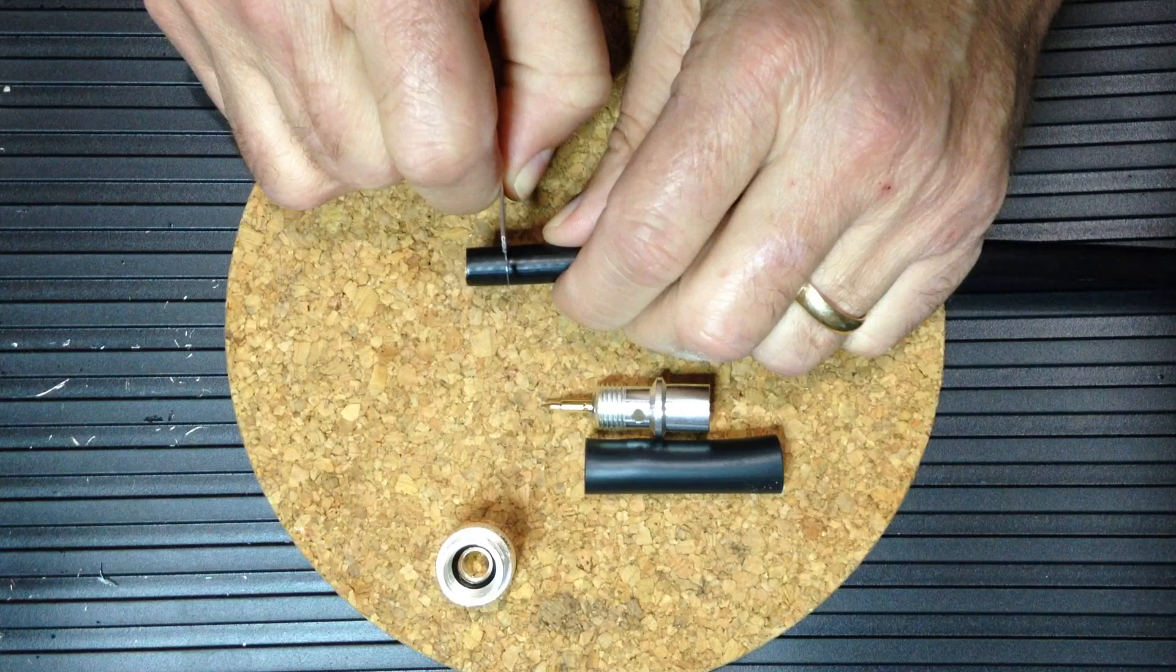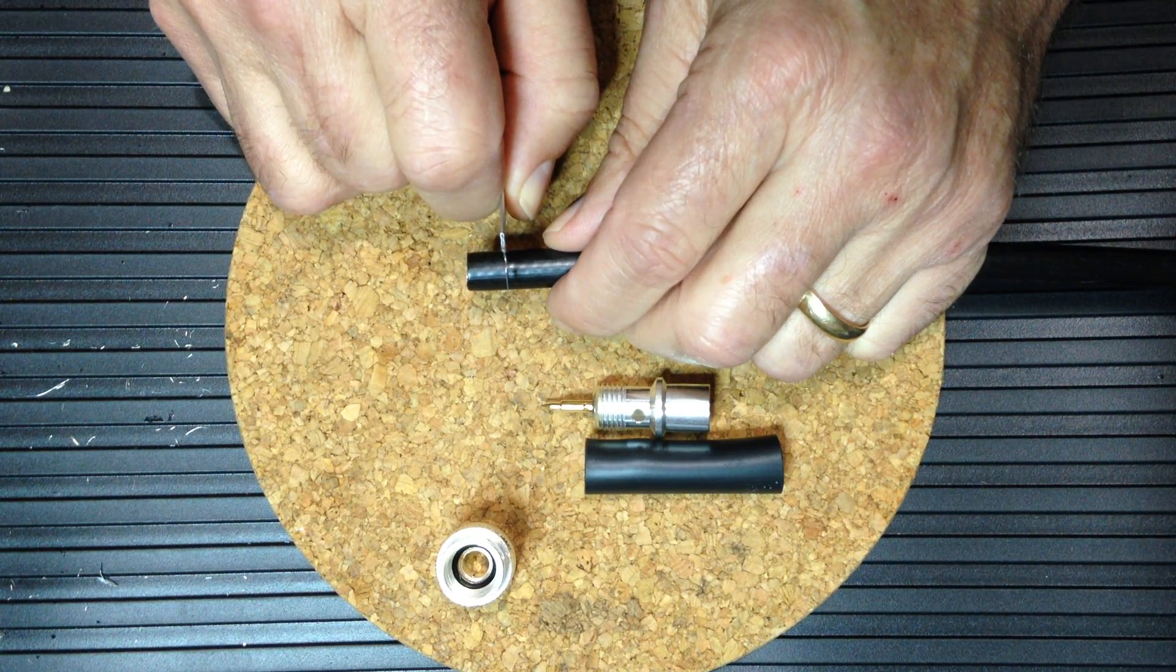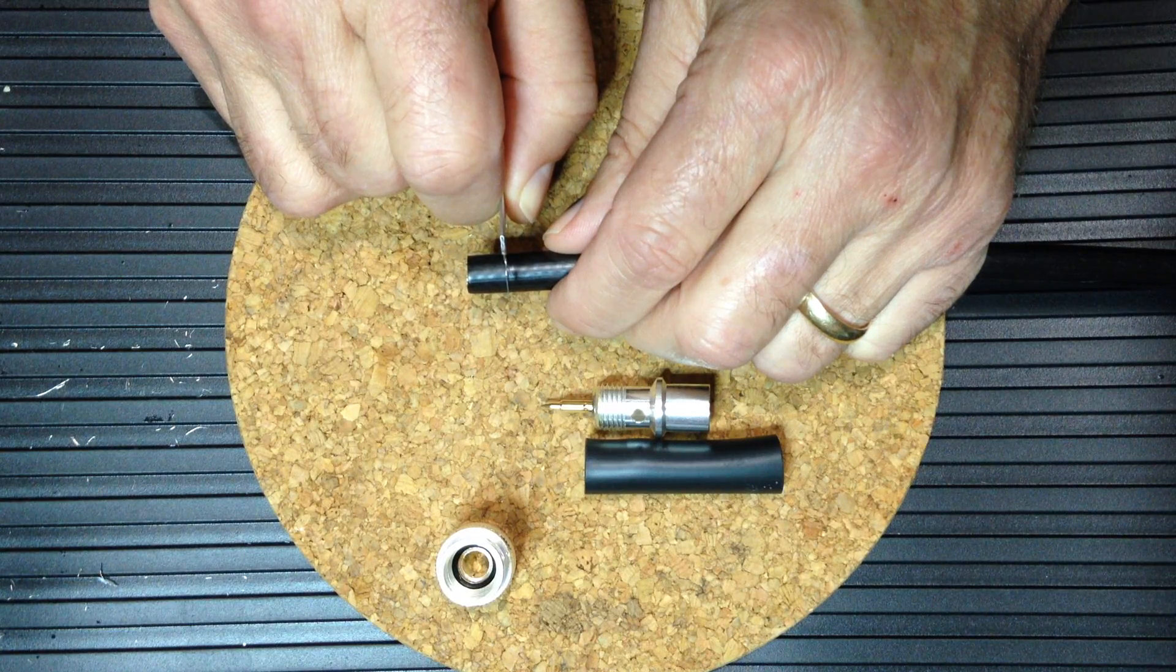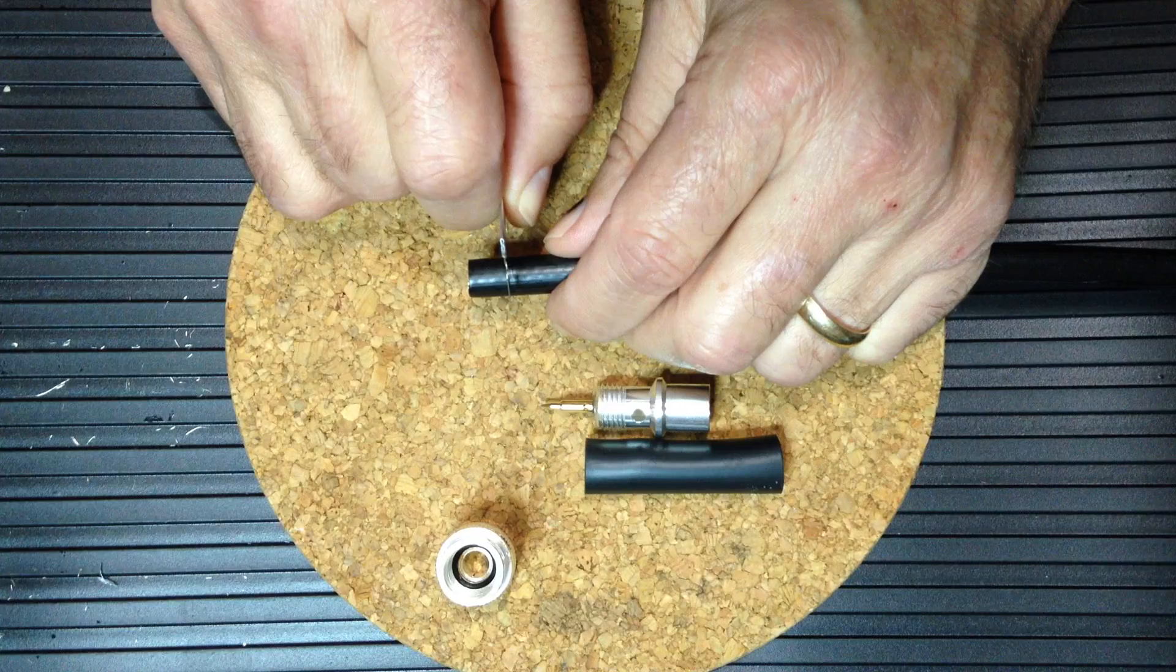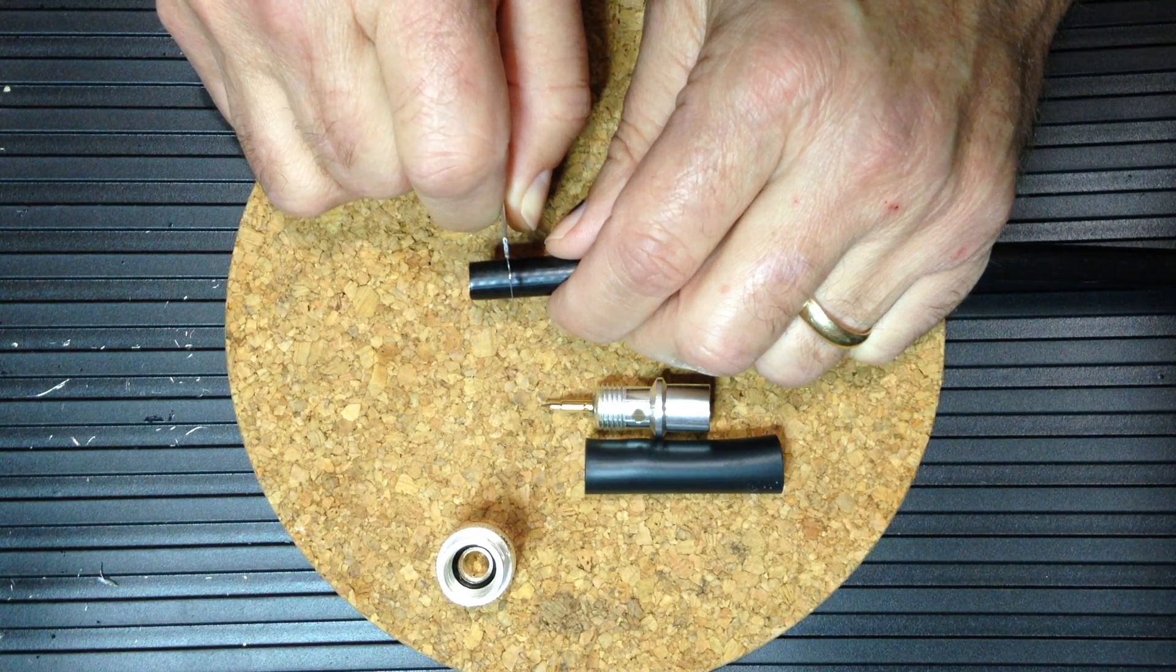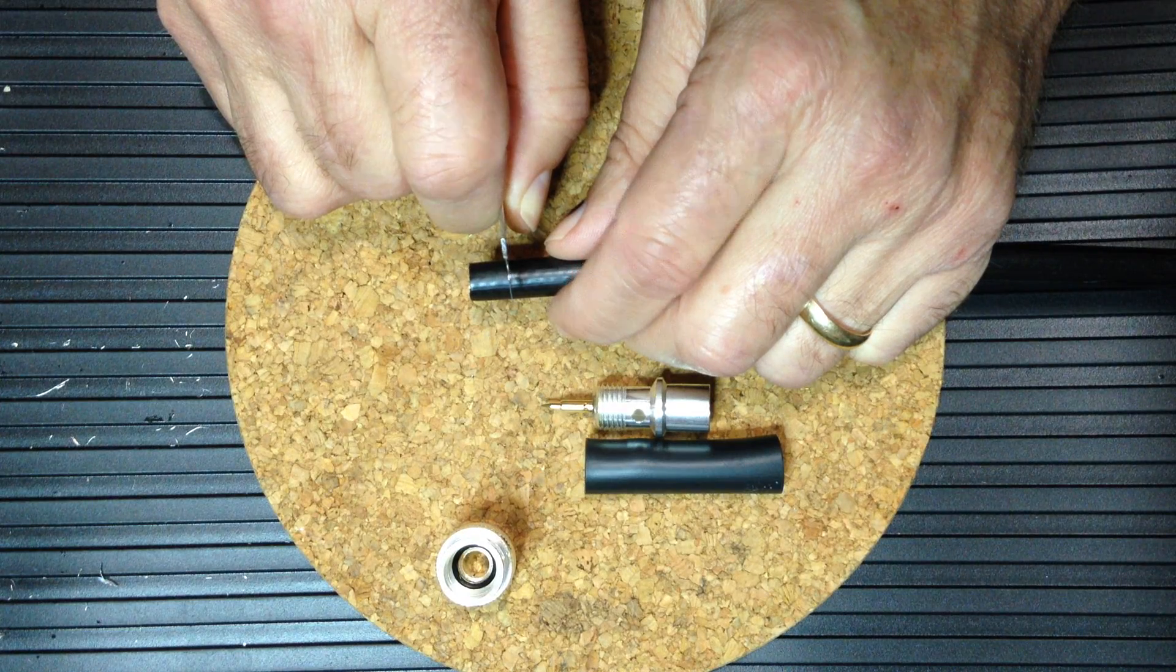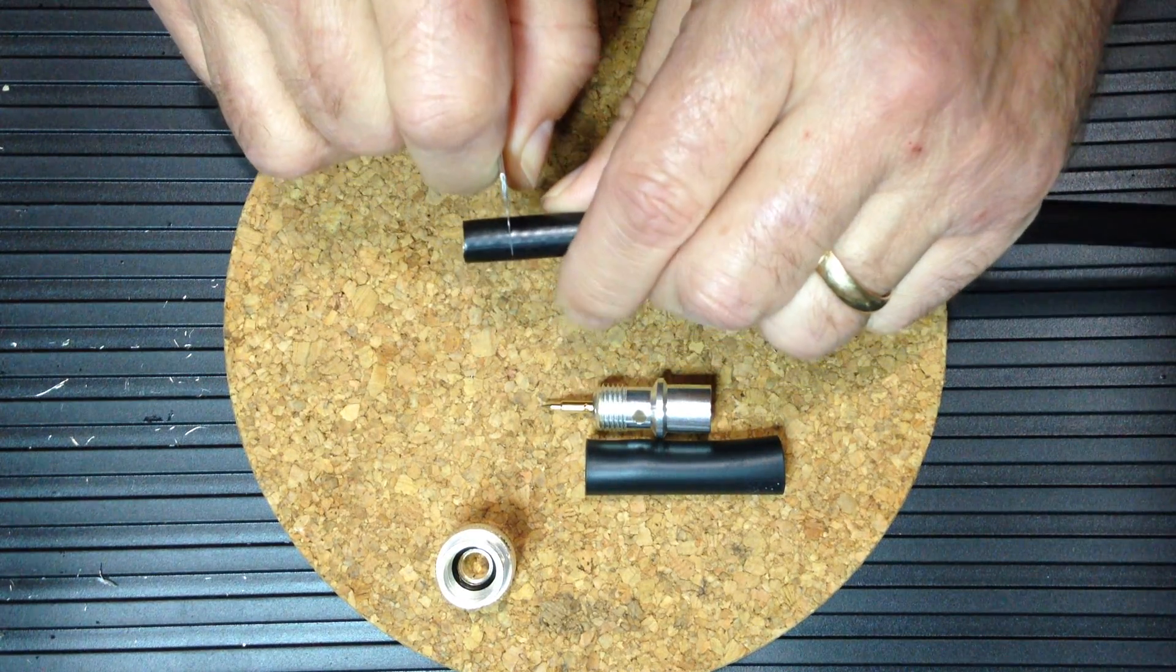In this cut we'll be going through the outer jacket and through the shield braid and down into the center dielectric. However we want to avoid nicking the center conductor. RF travels along or propagates along the skin of the conductor, and nicking the outer skin of the conductor will adversely affect the performance of the resulting connector.